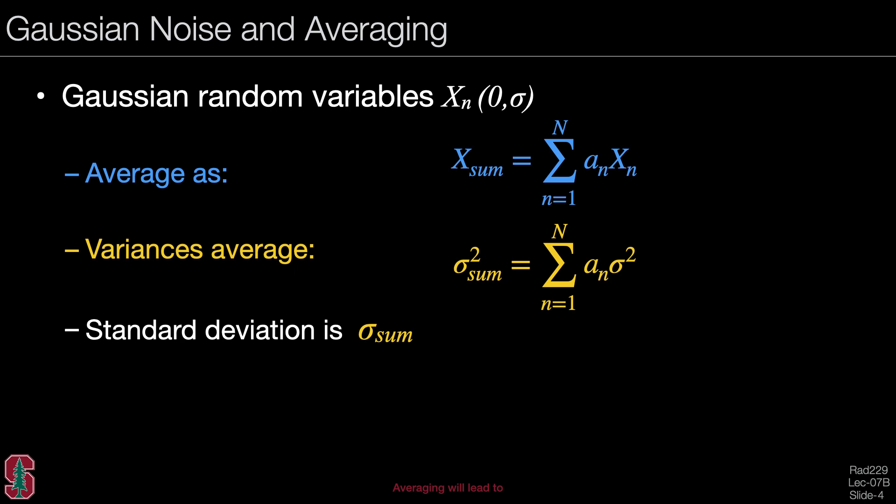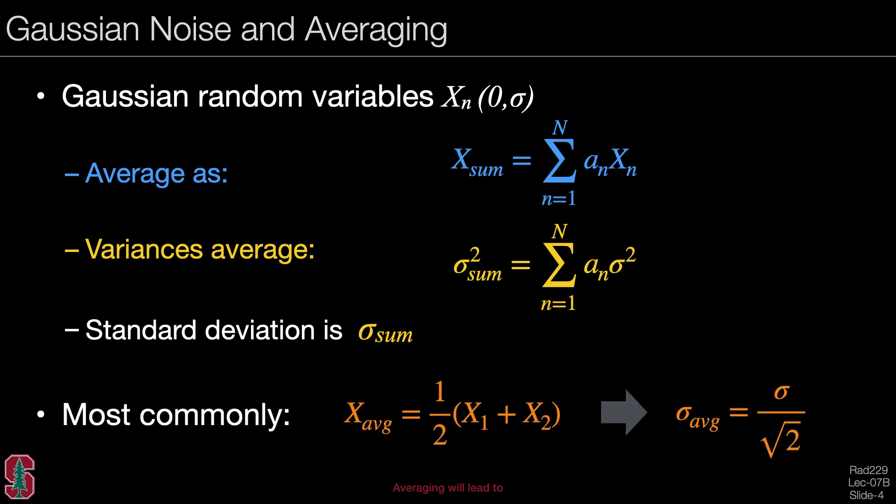The standard deviation sigma sub sum is the square root of the overall variance. Most commonly, we might take an average of two random variables — simply one half of the sum of those random variables. In this case, the average sigma will be sigma reduced by the square root of two.